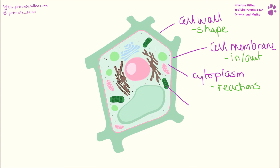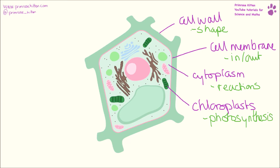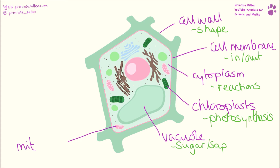These green bits here are our chloroplasts. This is where photosynthesis is going to take place. Here, this large empty space is going to be our vacuole. This is full of sugar or sap. Moving round, we have our mitochondria. This is where respiration is going to take place.